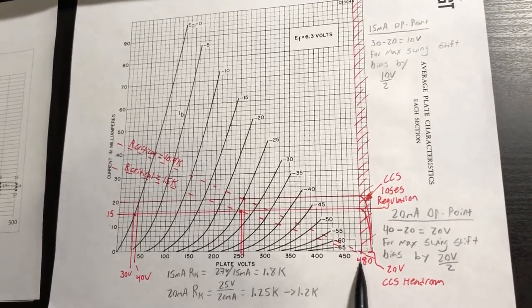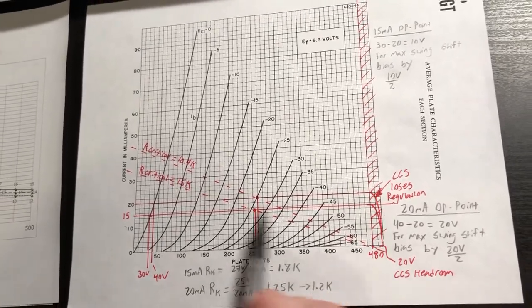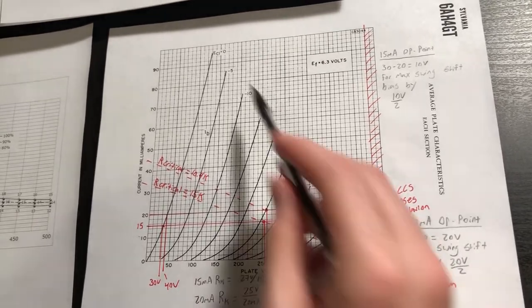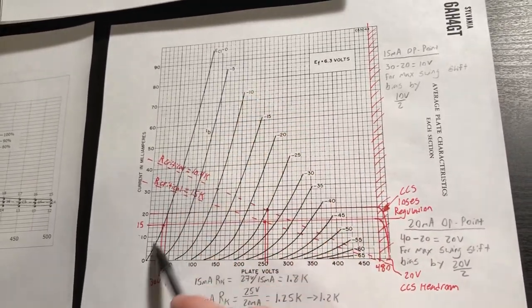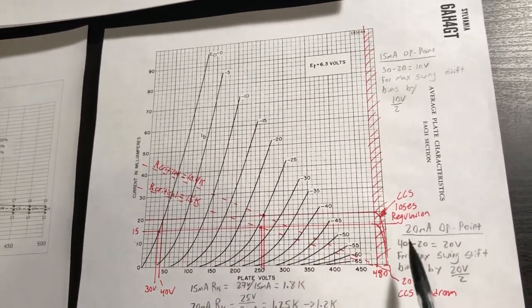And so therefore for headroom, we need to stay away from that region. So if this 480 volt line is one bound of our maximum signal swing along our idealized high impedance constant current source load, the zero grid volt curve forms our other boundary in terms of where we can swing the signal.